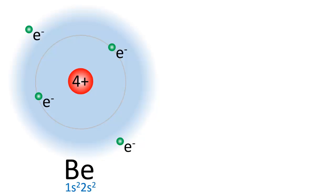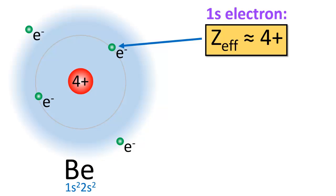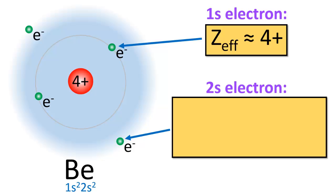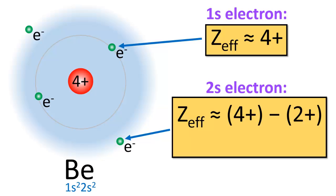...we can argue that the 2s electrons don't feel the full charge of the nucleus because the 1s electrons are shielding them from the full positive charge. The 1s electrons have an effective nuclear charge of 4+ — they feel the full attractive force of the nucleus with no shielding. The 2s electrons, however, have a lower effective nuclear charge: 4+ reduced by 2+ due to shielding from the two 1s electrons, resulting in an effective nuclear charge of 2+ for beryllium's 2s electrons.